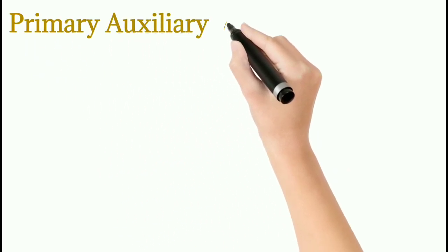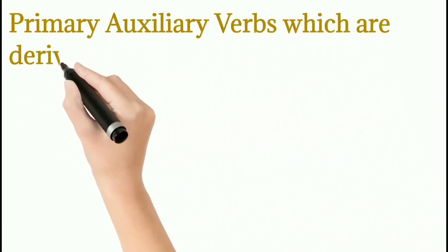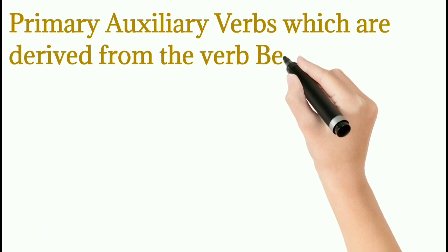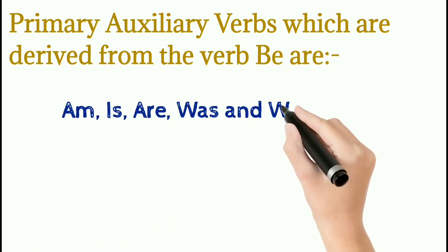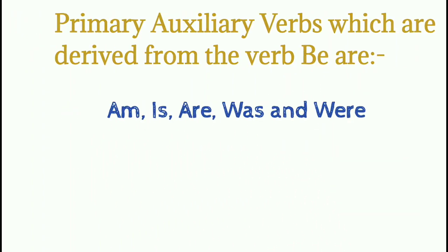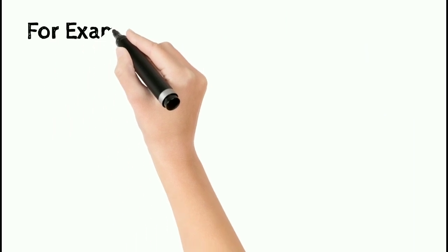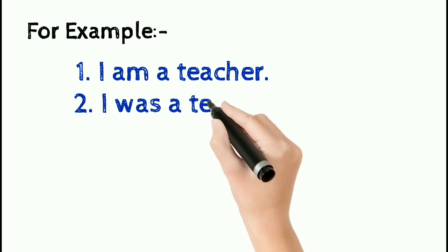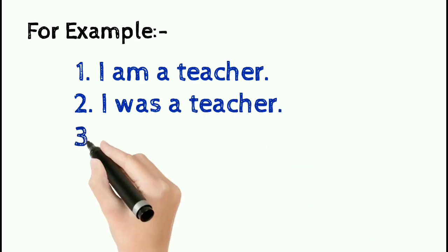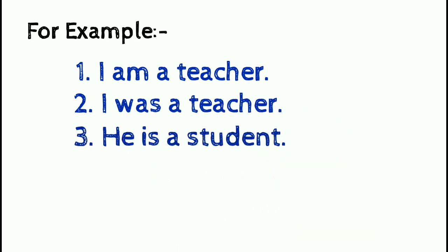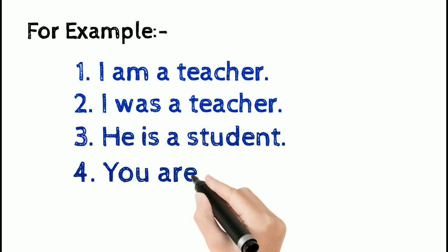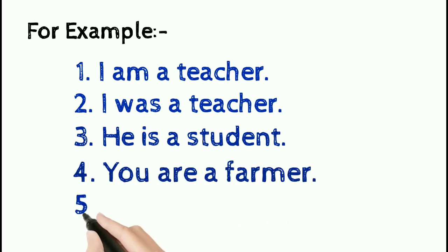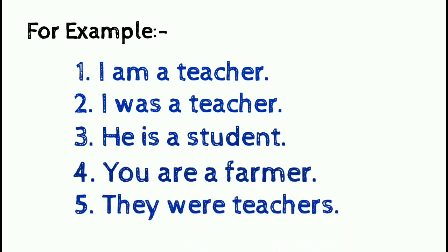Primary auxiliary verbs which are derived from the verb 'be' are: am, is, are, and their past forms. For example: I am a teacher. I was a teacher. He is a student. You are a farmer. They were teachers. In the above examples, am, was, is, are, and were are primary auxiliary verbs.